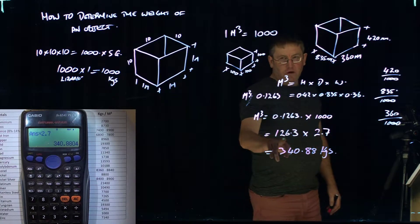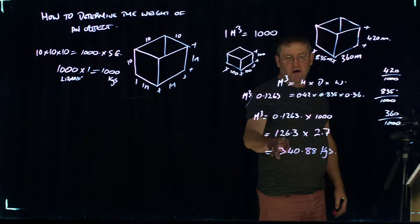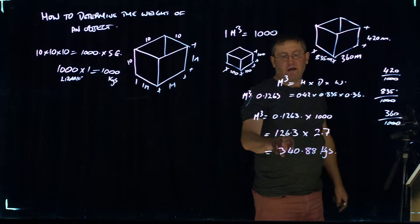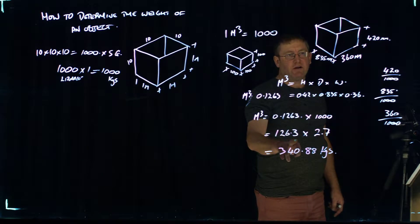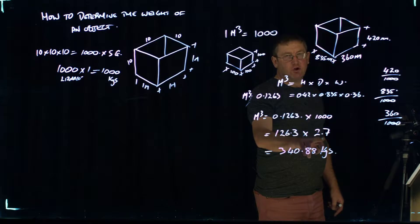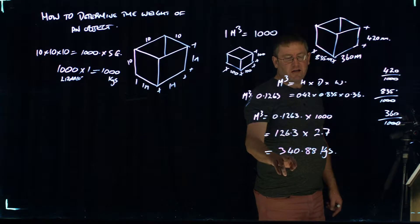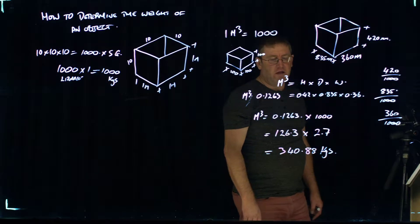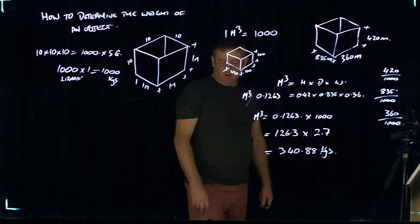So if it was water with a specific gravity of 1, that tank would weigh 126.3 kilograms. But aluminum is 2.7 times the weight of water on earth. So we times the 126.3 by 2.7, and that gives us a weight of 340.88.